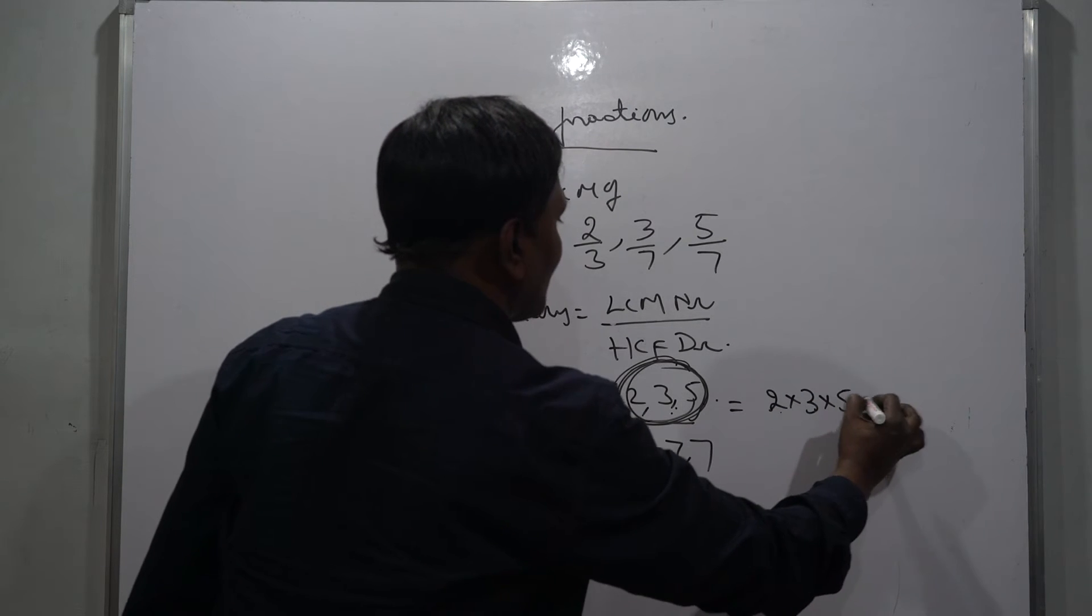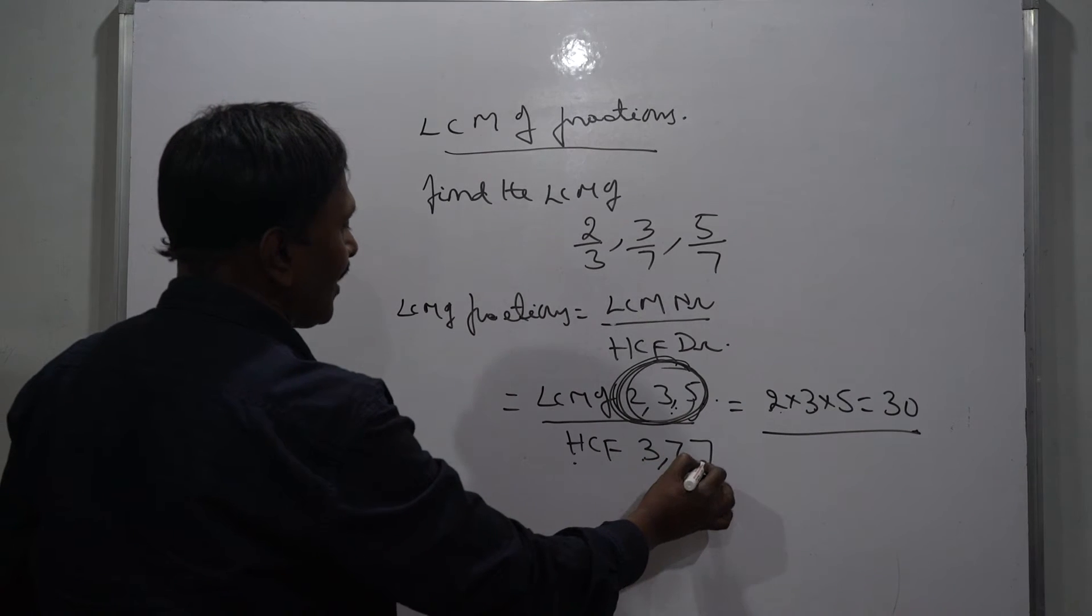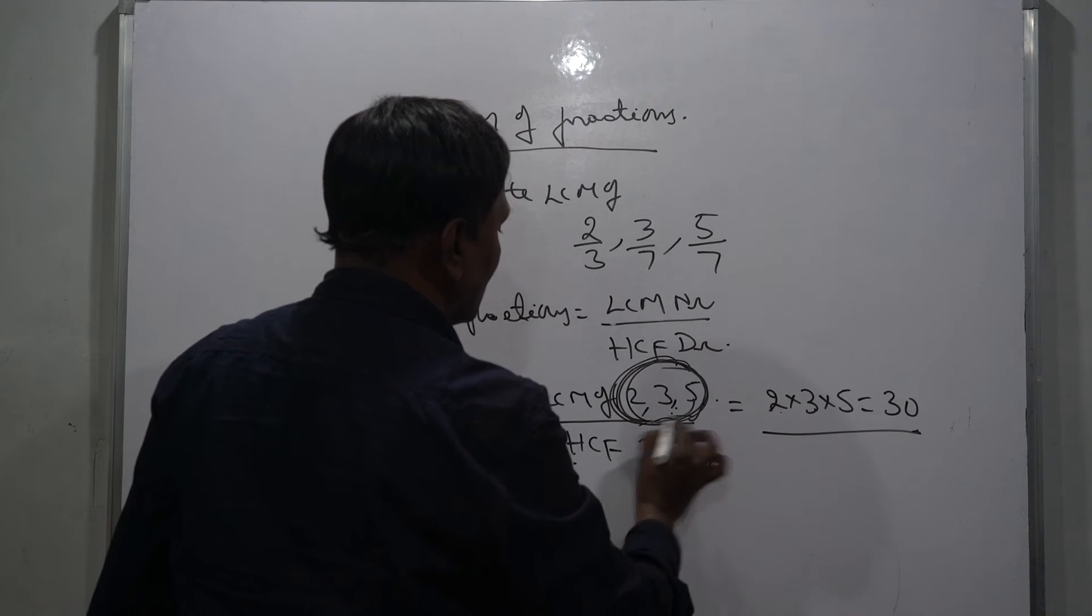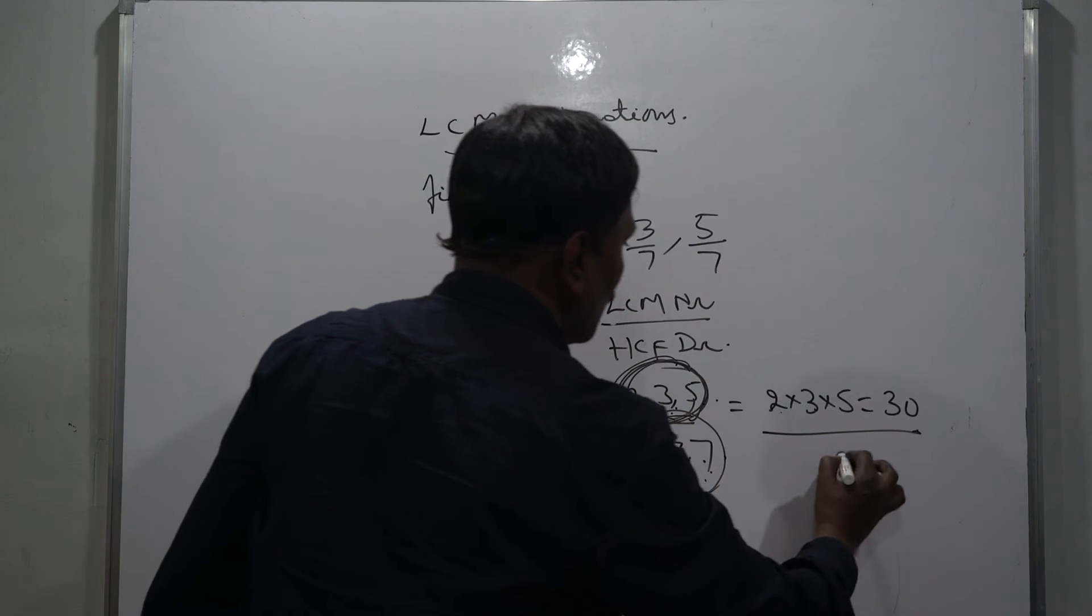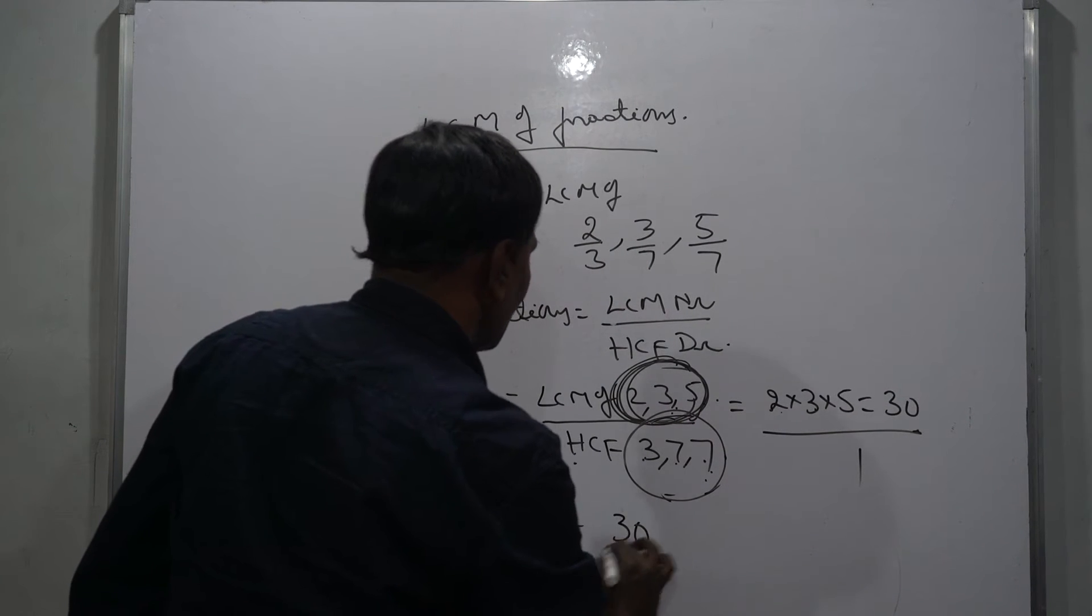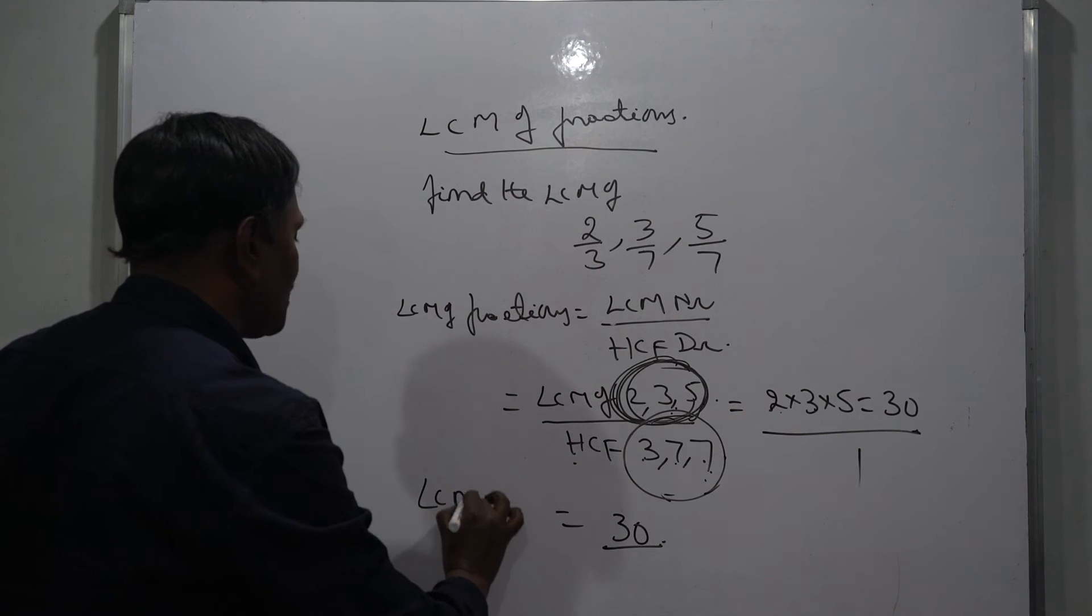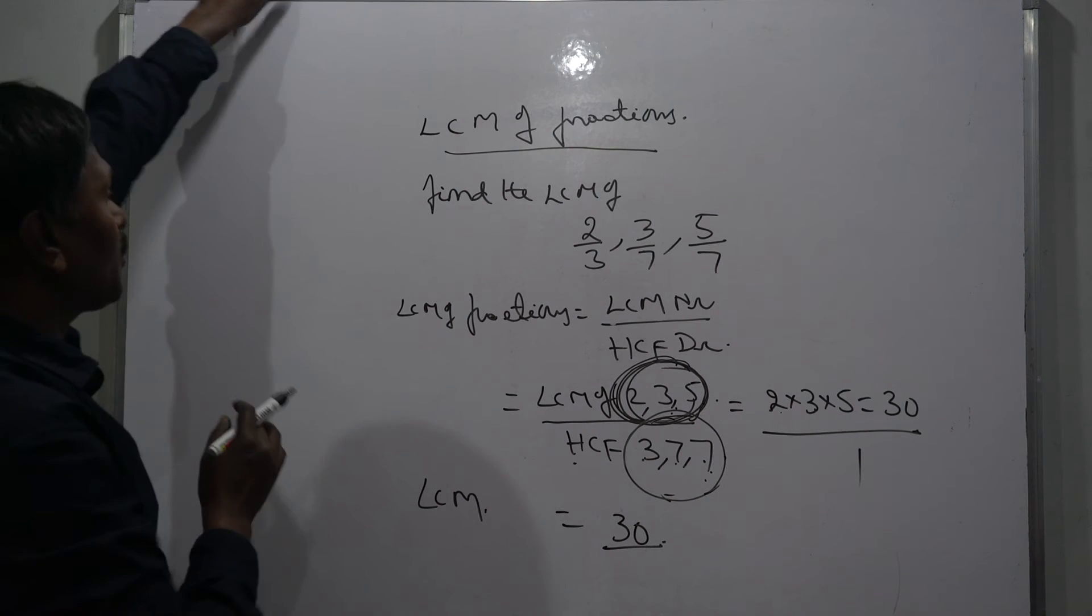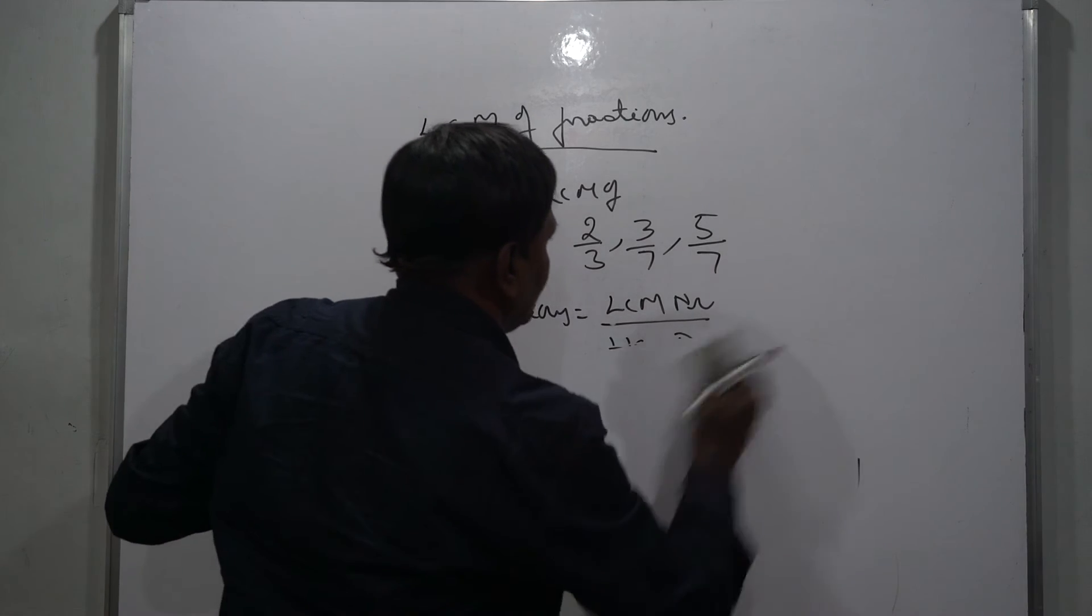So 2 times 3 times 5 equals 30. Next, HCF of 3, 7, 7 - the HCF is highest common factor. Here the HCF is only 1. So it means 30 is the LCM of the fractions. The LCM of these fractions is 30.